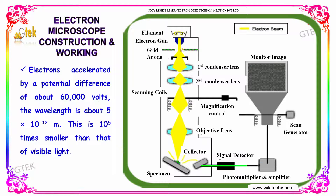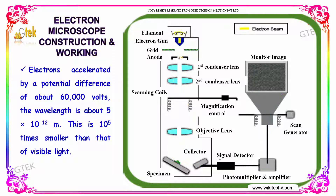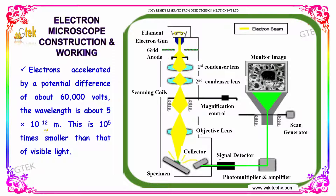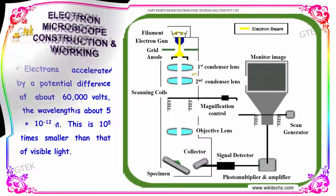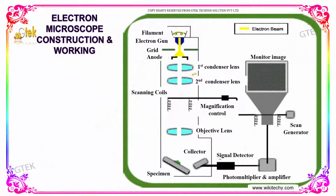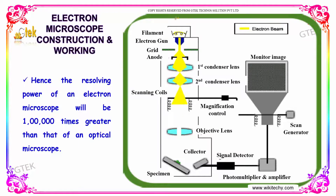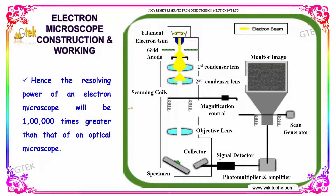The electrons are accelerated by a potential difference of about 60,000 volts and the wavelength is about 5 × 10⁻² meters. This is about 10⁵ times smaller than that of visible light. Hence, the resolving power of an electron microscope will be 1 lakh times greater than that of the optical microscope.